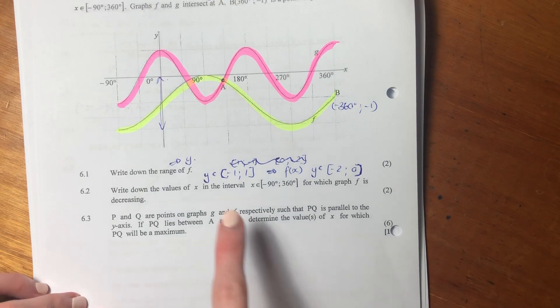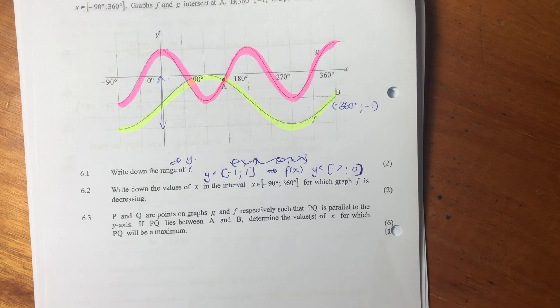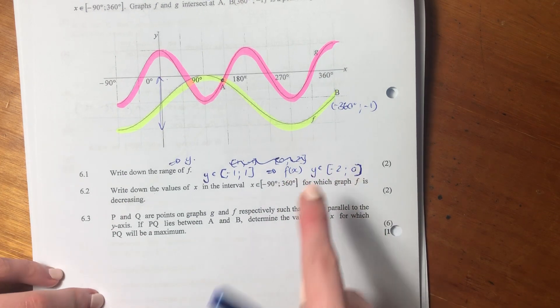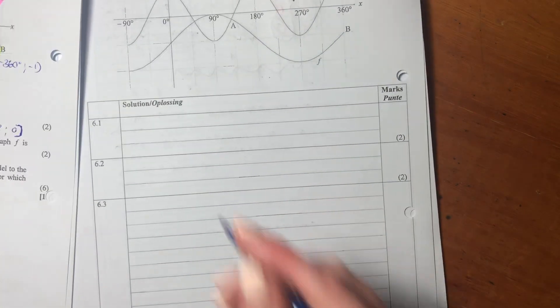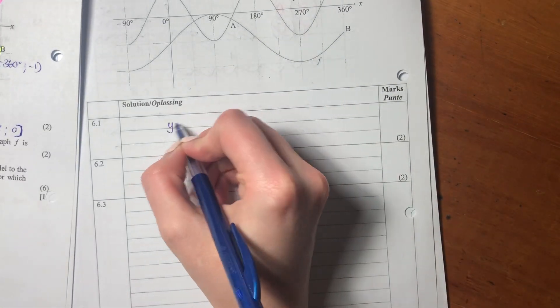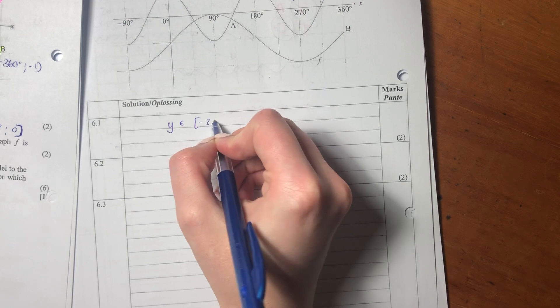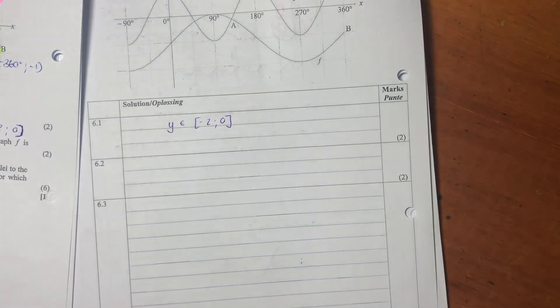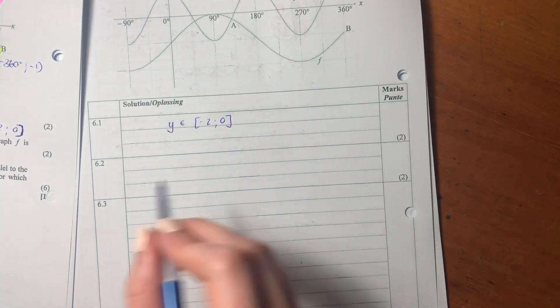So it's important to identify what is a normal sine graph, this range, and what have we done to the sine graph. We've shifted it, therefore our range is shifted. So we'd say y is the element of negative 2 and 0.